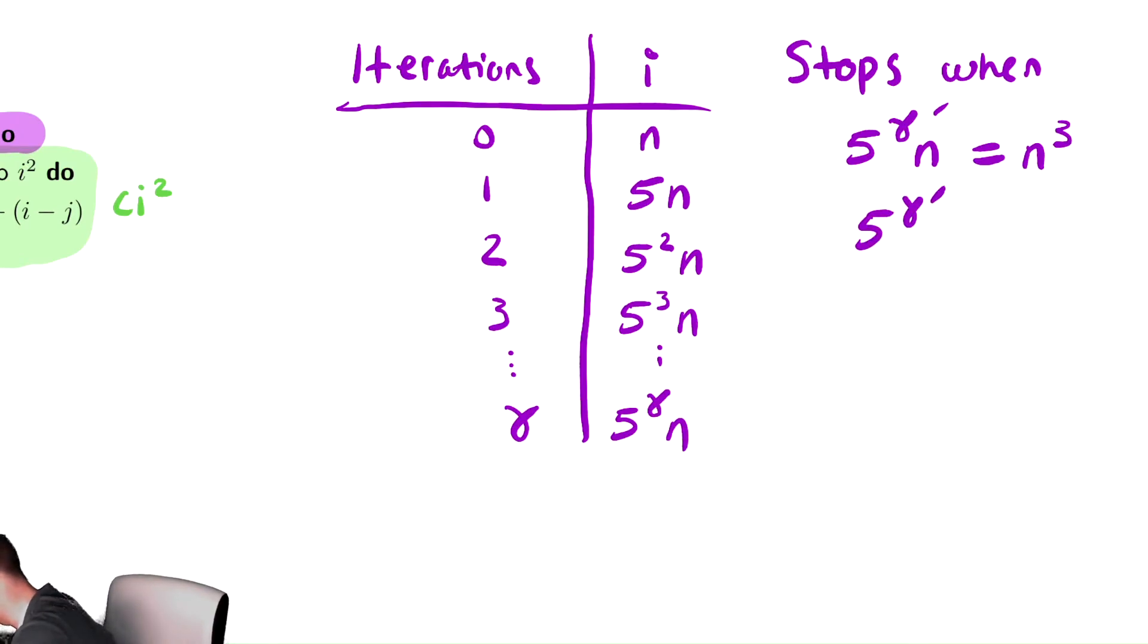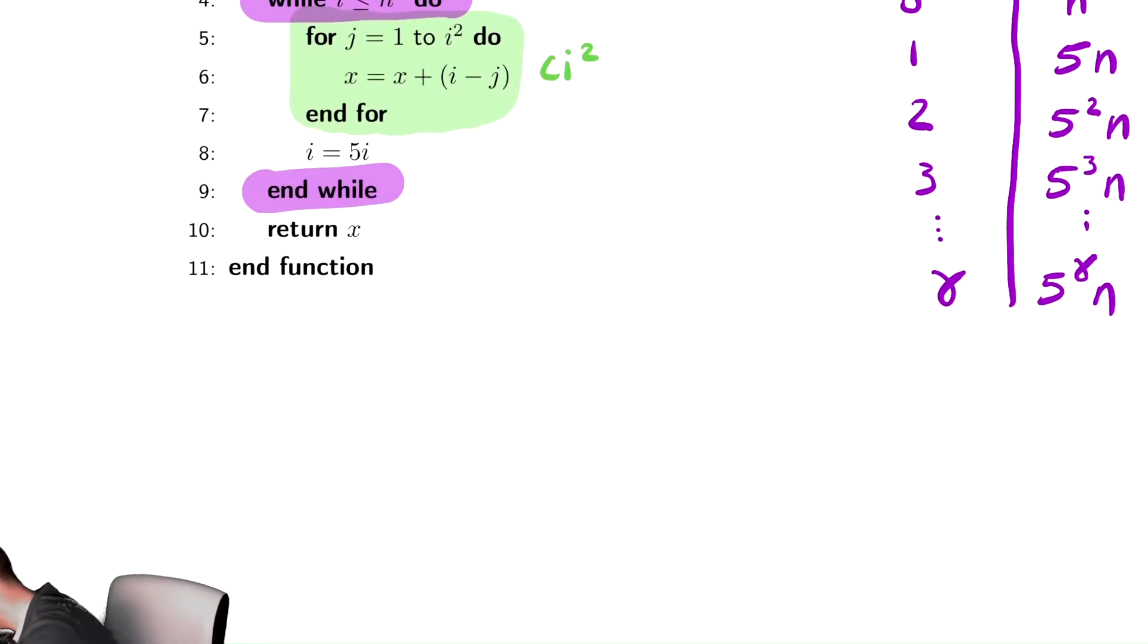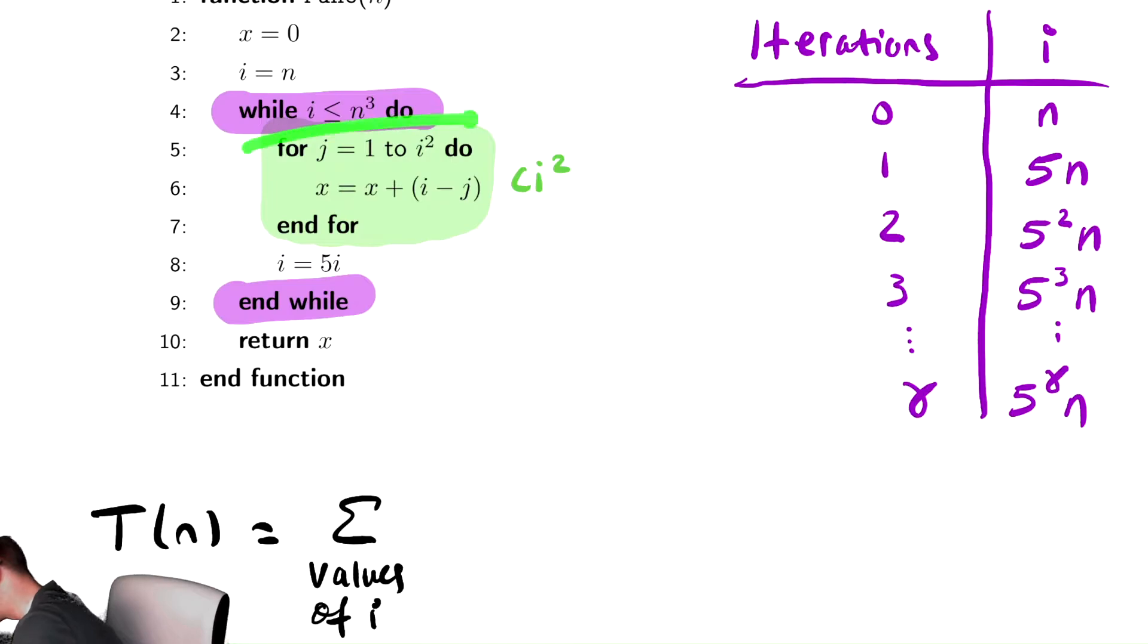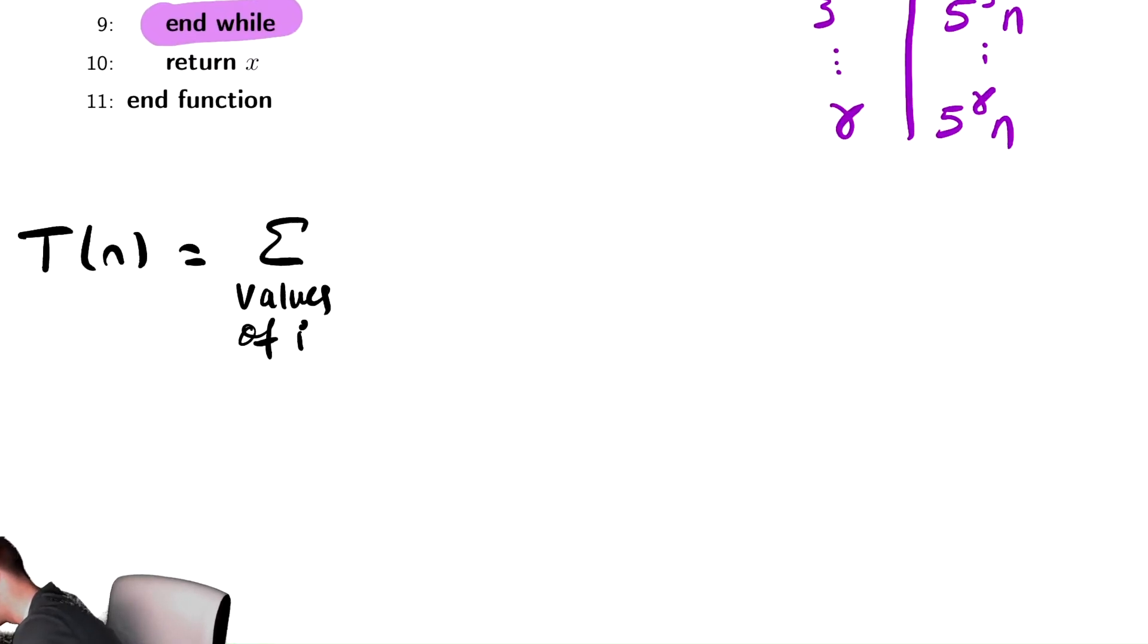Solve that for gamma prime. To do that, we divide by n on both sides and get 5 to the gamma prime equals n squared. Take a log base 5 of both sides, and we have gamma prime equals log base 5 of n squared. So we now know what that is. We can now work on building our summation to analyze, as we have done in the past.